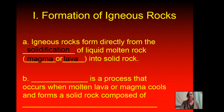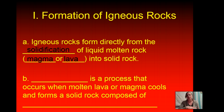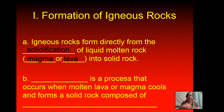Igneous rocks form directly from the solidification of liquid molten rock, which is known as magma or lava, and it turns into solid rock. The difference between magma and lava is magma is under the ground. When it comes out of the earth in volcanic eruptions, we call it lava. So it's the same material, just one's under the ground and one's out of the ground.